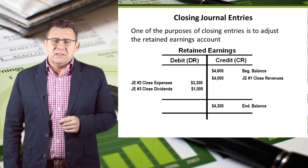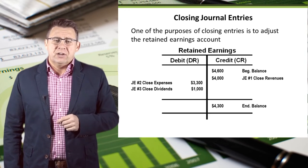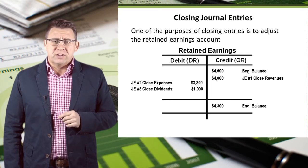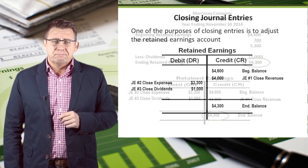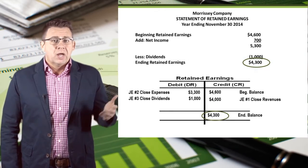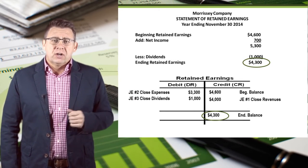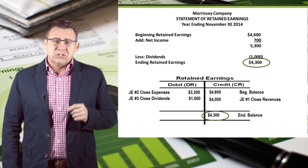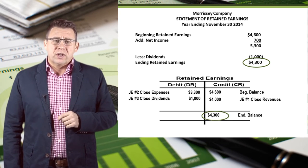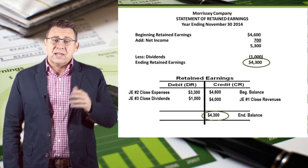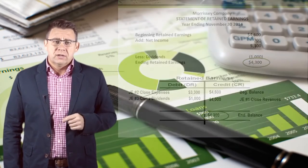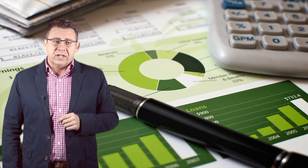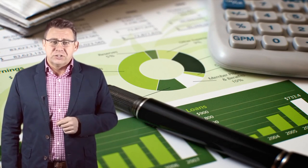Let's compare that to the statement of retained earnings and see what we reported to our investors and creditors. You can see that the ledger for retained earnings matches what we reported on the statement of retained earnings — it's like magic, only real. That concludes this important video on closing journal entries.